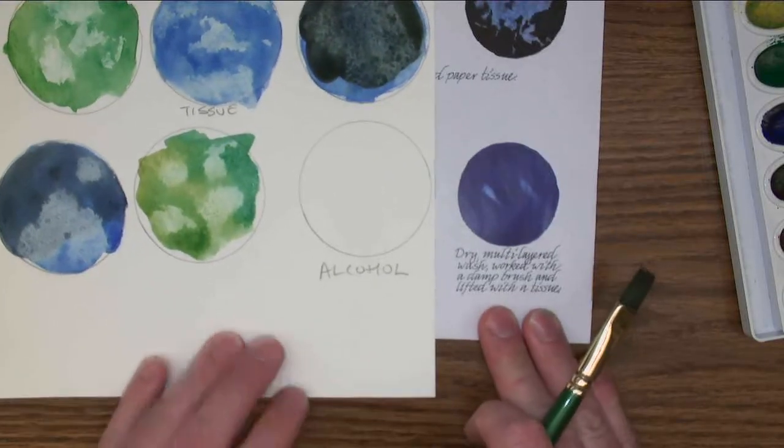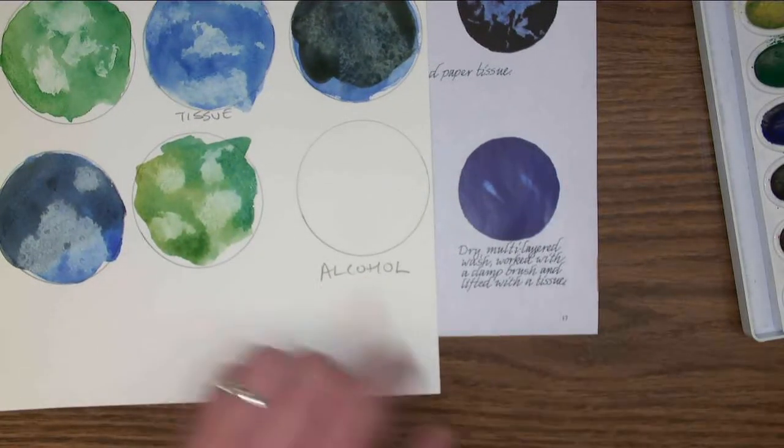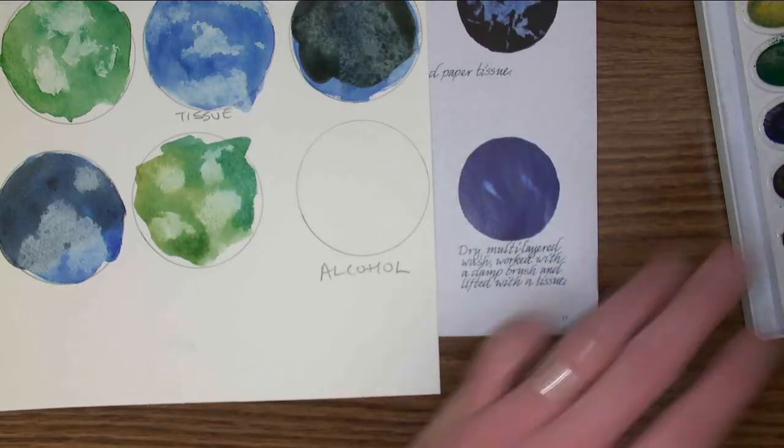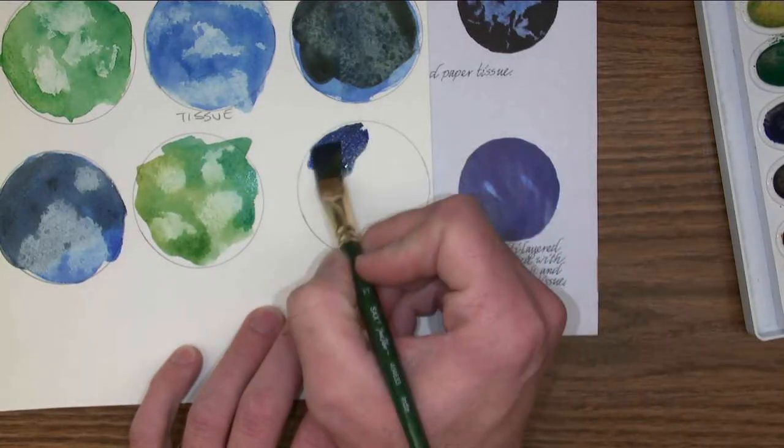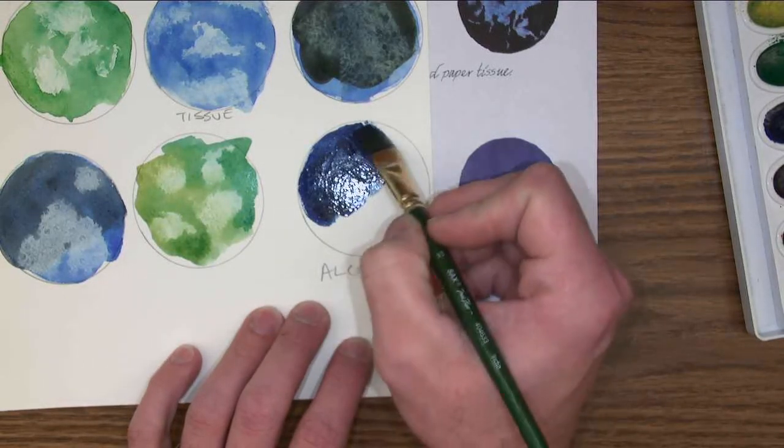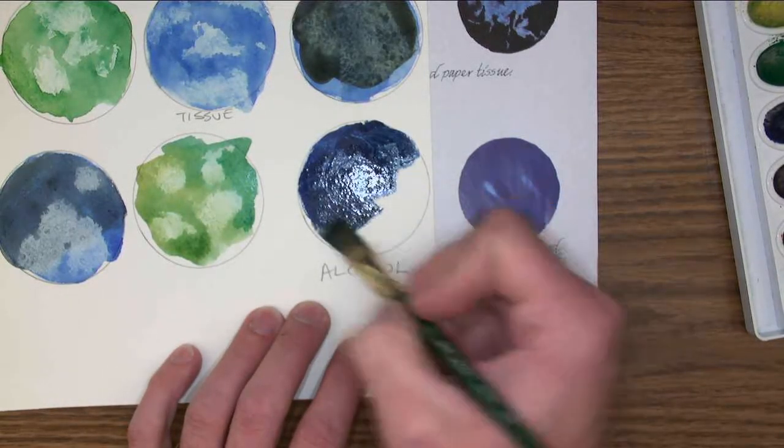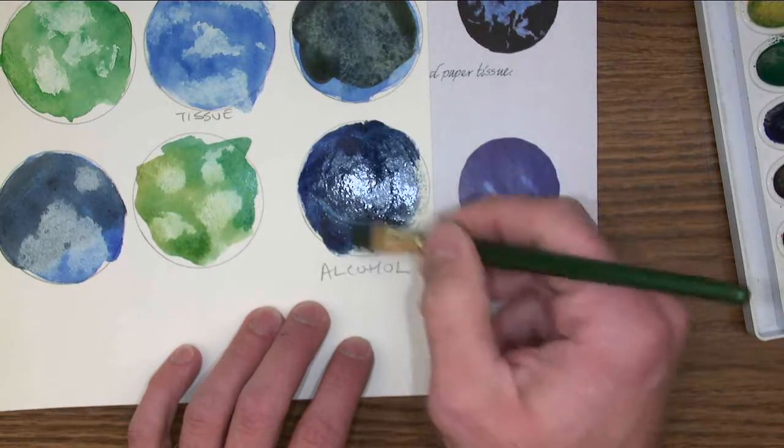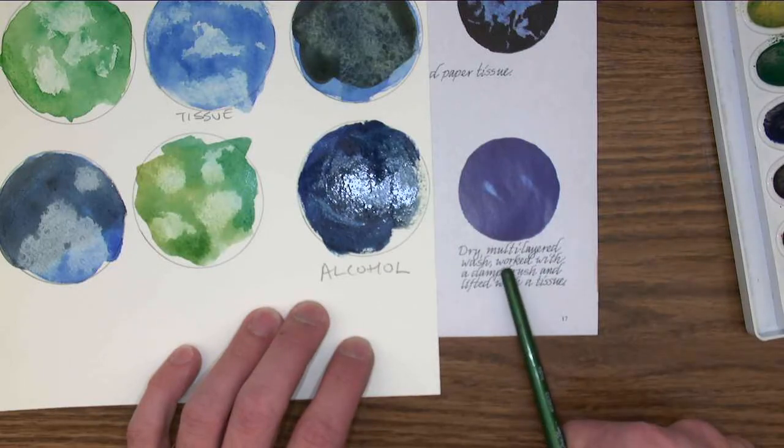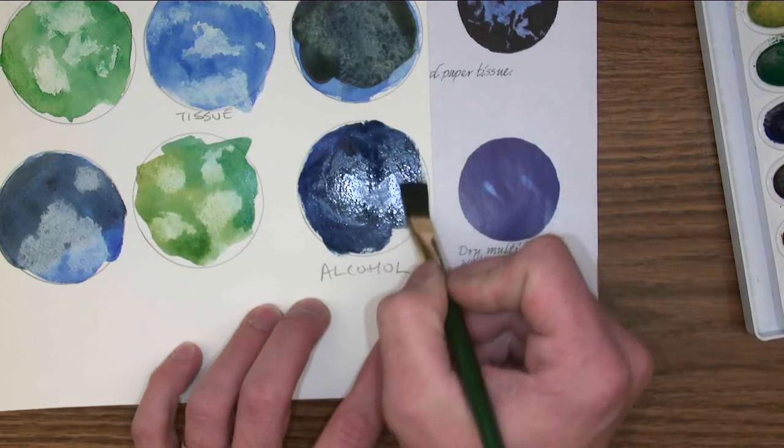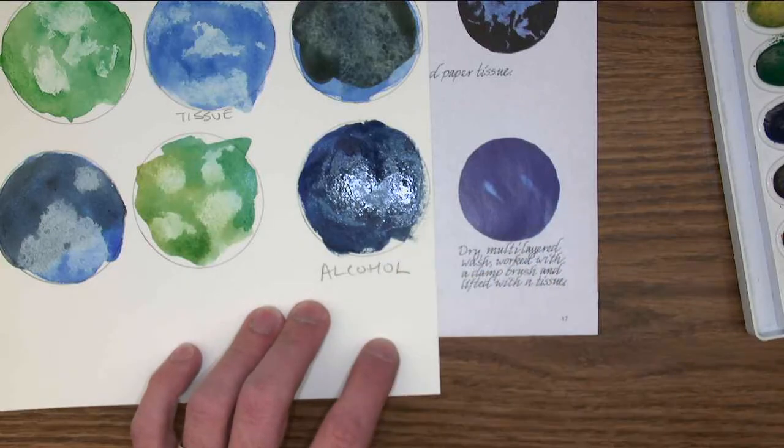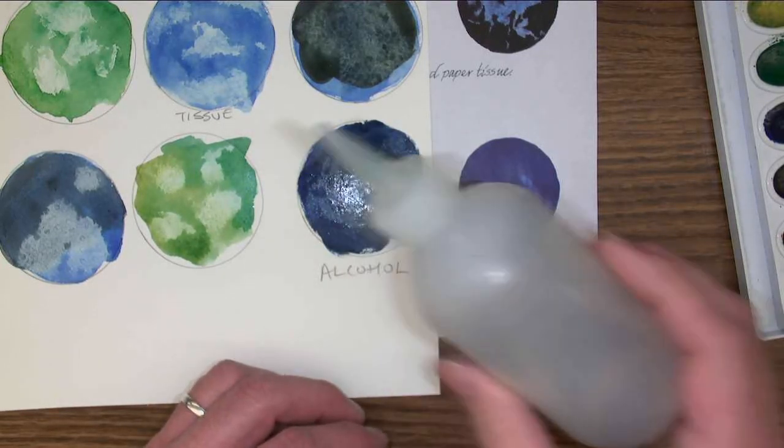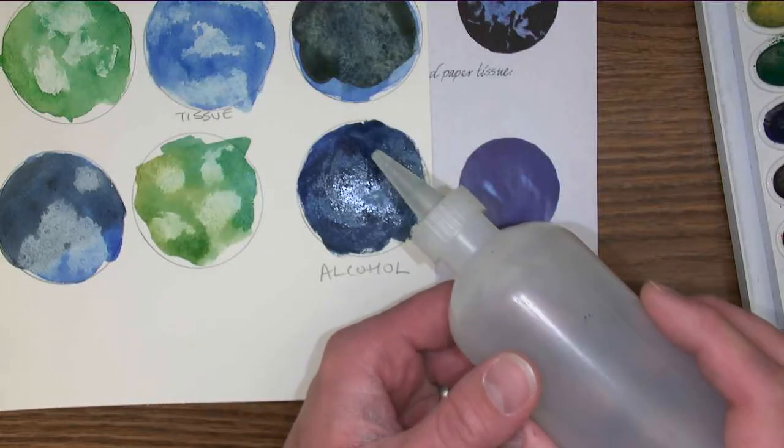The last one here is alcohol, and an alcohol wash. I could do a variety of colors too, but again the pigment needs to be fairly strong. So I'm going in on a dry surface with a good amount of pigment. Also going to do multi-layer. It says multi-layered with a damp brush and lifted with a tissue. Instead of the tissue, I'm going to do two things here. One is alcohol. And in these bottles I have the alcohol. If I just put the alcohol on there with a drop, you'll see what happens.